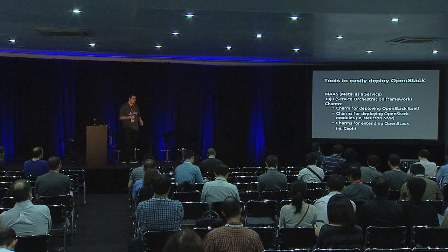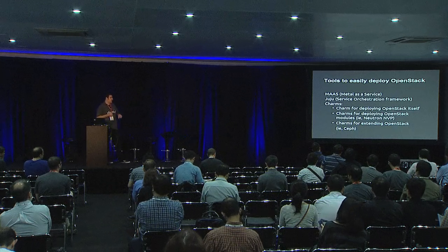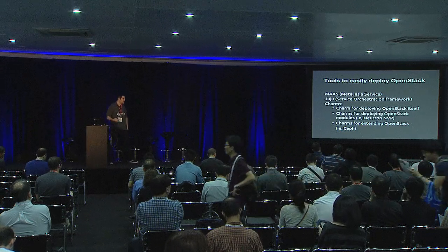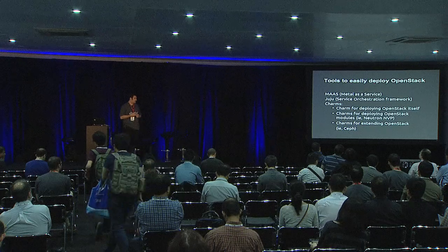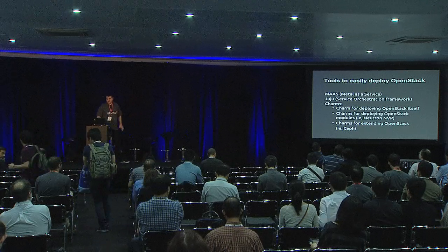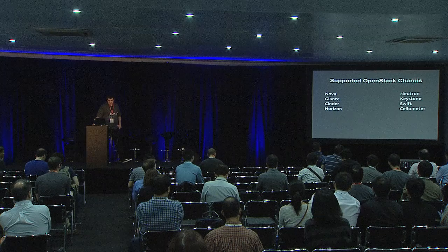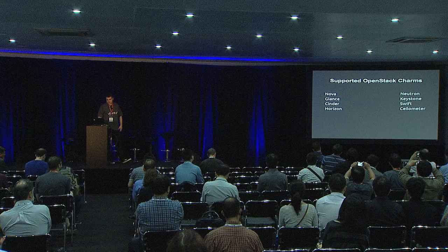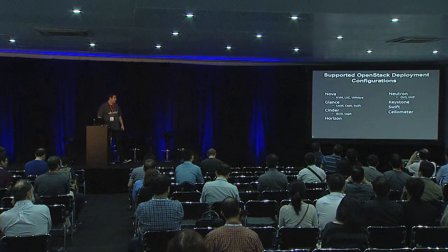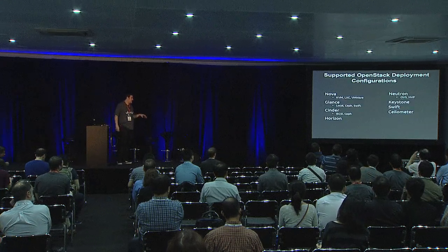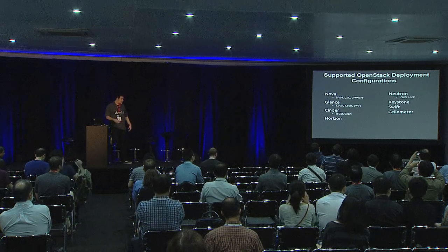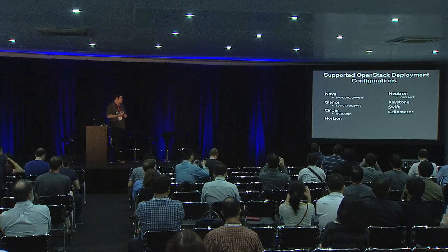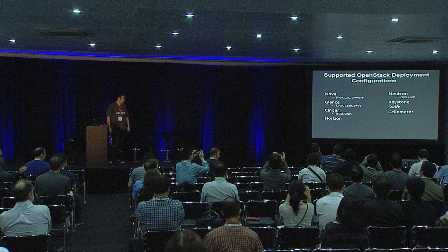For instance, we have charms to deploy specific network plug-ins to Neutron. We also have charms for extending OpenStack to interface with more external resources — things like Ceph storage clusters or VMware clusters. We have charms that support all of the core OpenStack components, making it very easy to deploy all of these. We also support deploying each one in different configurations to turn every cloud you deploy into its own snowflake if you want. We support all of the more standard drivers and defaults.